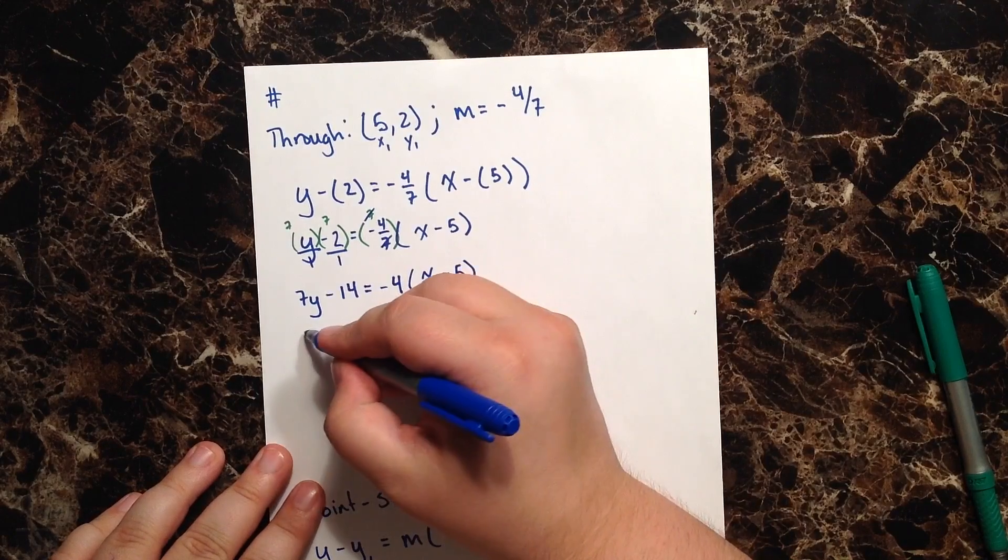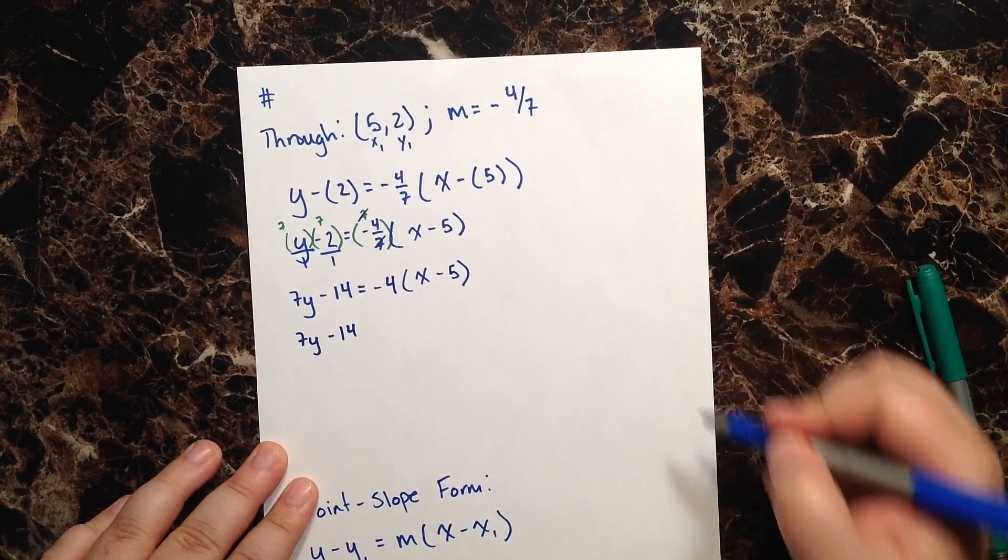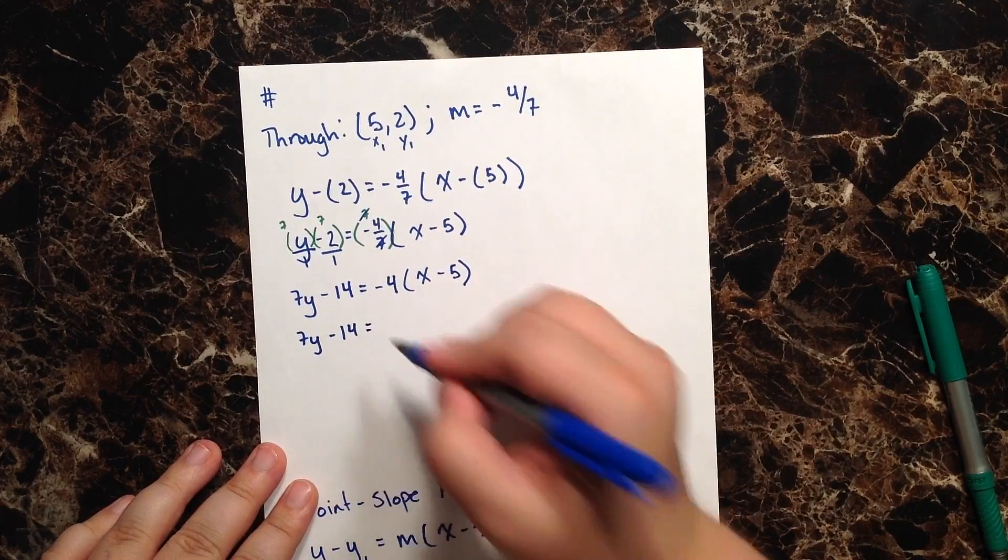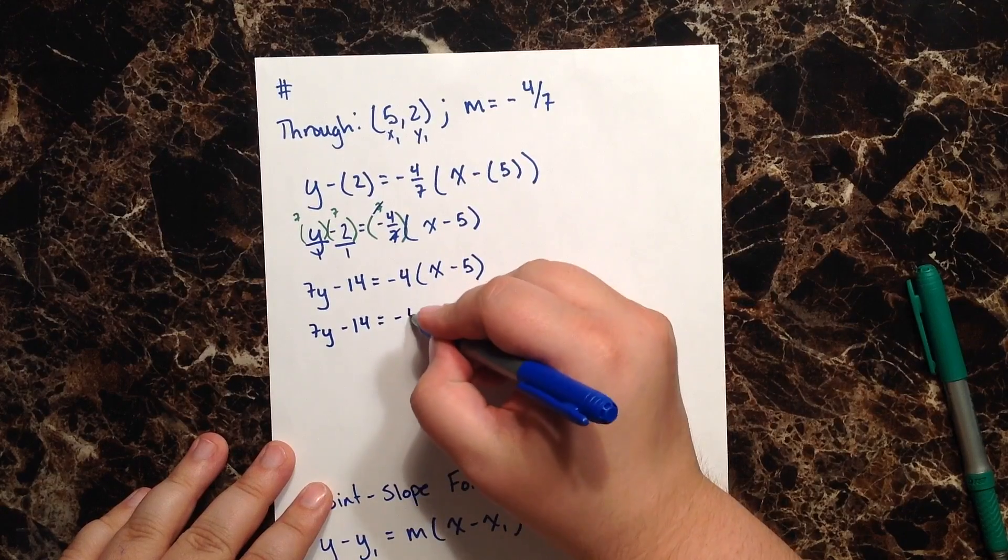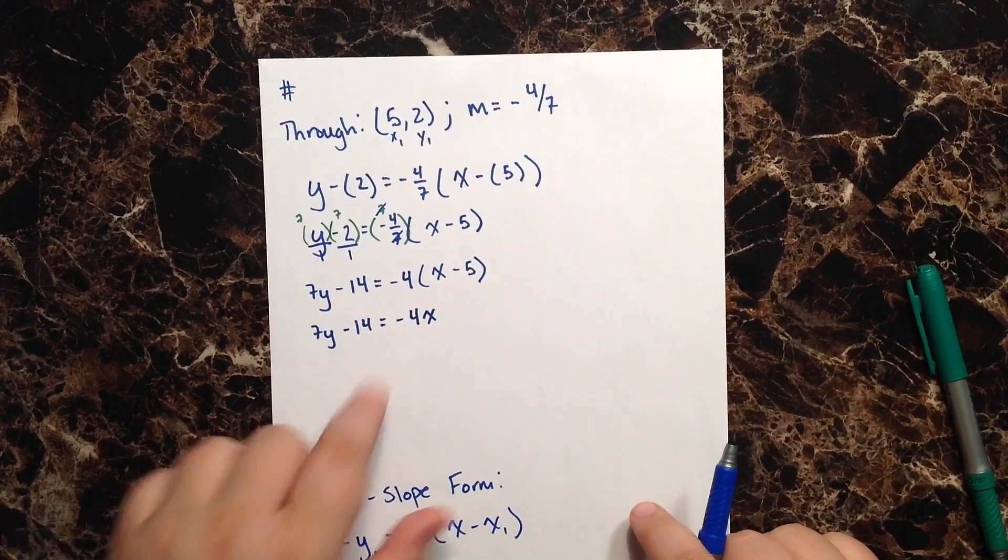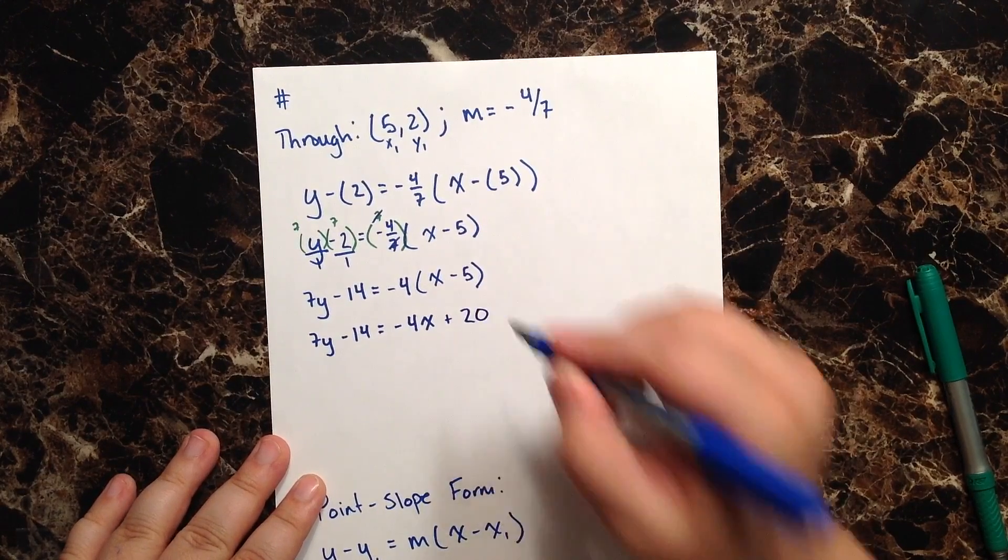All right, so let's go ahead and simplify the right-hand side of my equation now. So when I distribute my negative 4 to my x, I get negative 4x. And when I distribute my negative 4 to my negative 5, I get a positive 20.